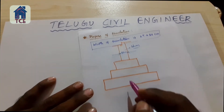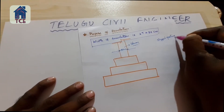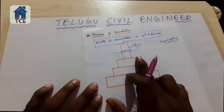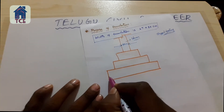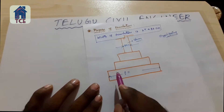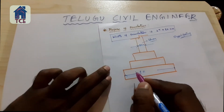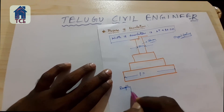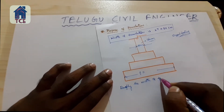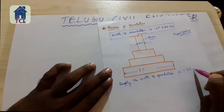Here is the foundation. This one is the stepped footing — the type of footings. This column is 2T plus 30 cm. So, roughly the width of foundation W is equal to 2T plus 30 cm.